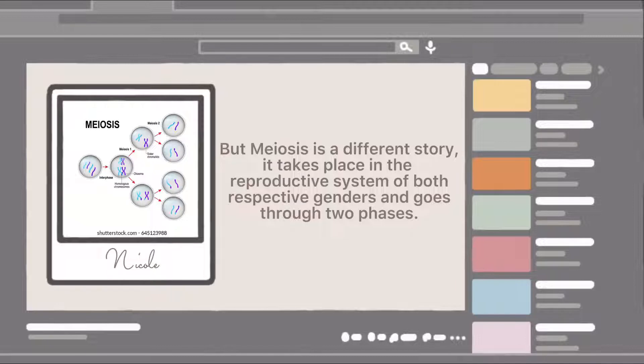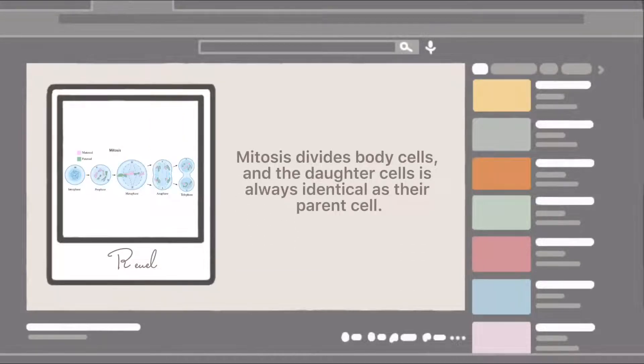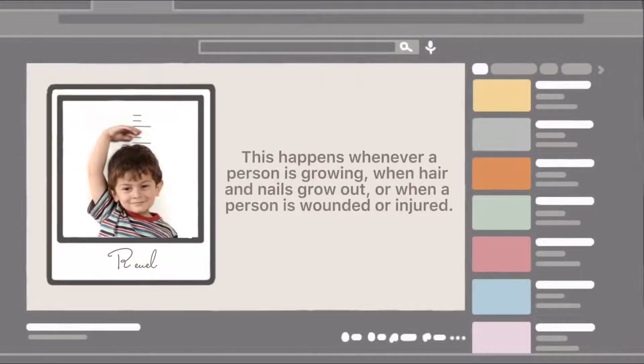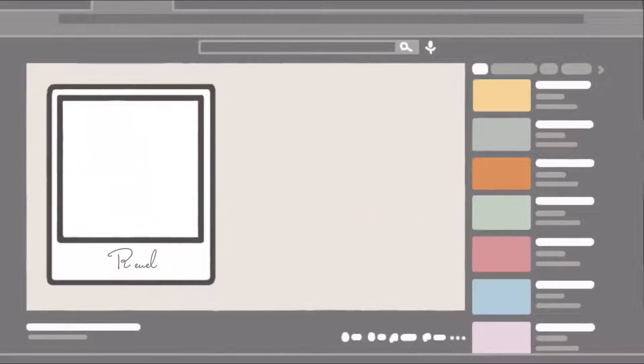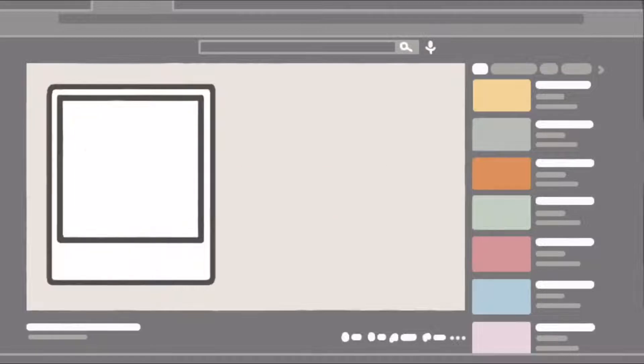The difference between the two is very important to remember. Mitosis divides body cells and the daughter cells are always identical to their parent cell. This happens whenever a person is growing, when hair and nails grow out, or when a person is wounded or injured. The rate of growth depends per respective cell.